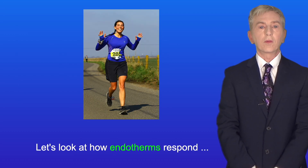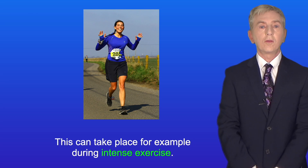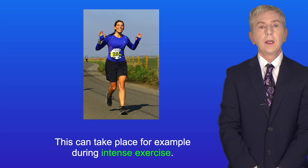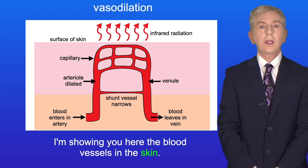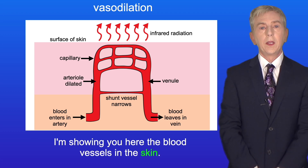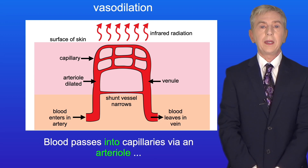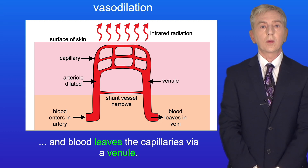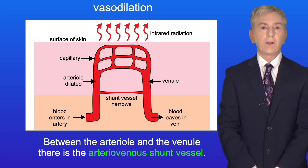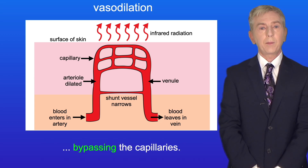Let's look at how endotherms respond to an increase in the core body temperature. This can take place, for example, during intense exercise. In this case, responses are activated to cool the body down. I'm showing you here the blood vessels in the skin. Beneath the surface of the skin, there is a network of capillaries. Blood passes into capillaries via an arteriole, and blood leaves the capillaries via a venule. Between the arteriole and the venule, there is the arteriovenous shunt vessel. Blood can pass through the shunt vessel, bypassing the capillaries.